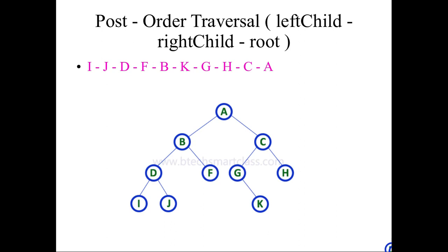Here I have given the same example which we have taken in in-order and pre-order traversal. Here A is the root node, then B and C are the left and right child of the root node A respectively. Then B is again a root for the D and F nodes. If you see D, it is having I and J as the children.